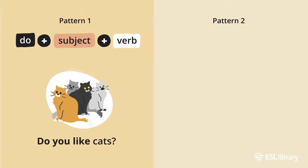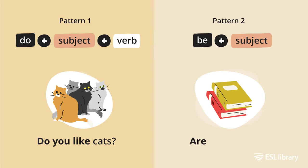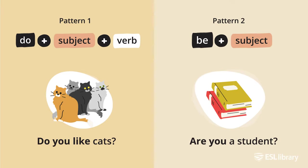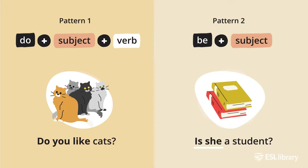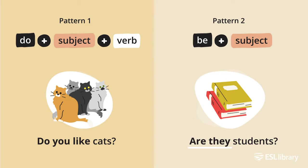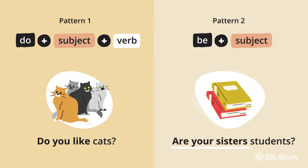Another common question pattern is: be + subject. An example of this question pattern is: 'Are you a student?' Note that 'be' changes forms with different subjects. For example: are you, am I, is he, is she, is it, are we, are they, is your sister, are your sisters.